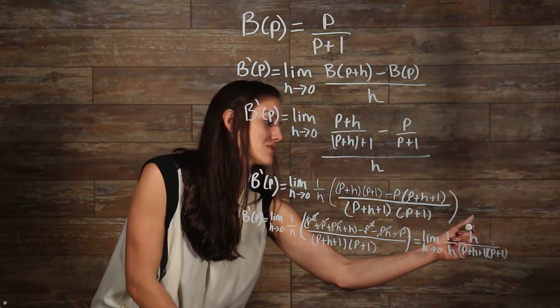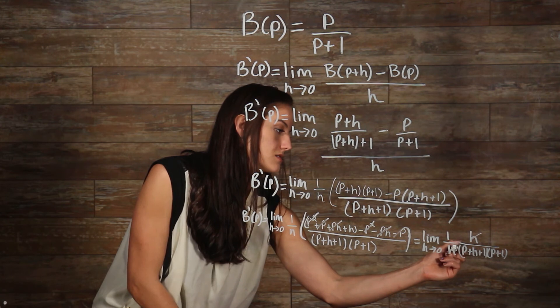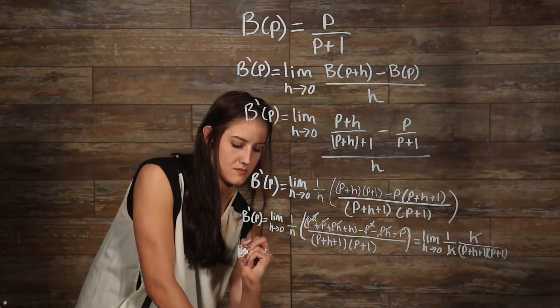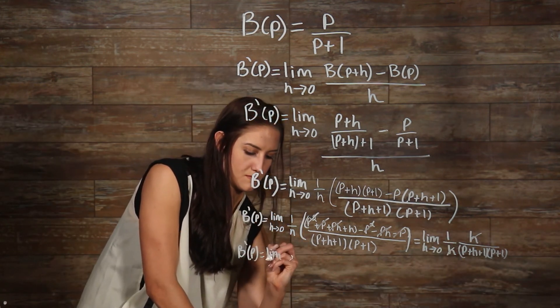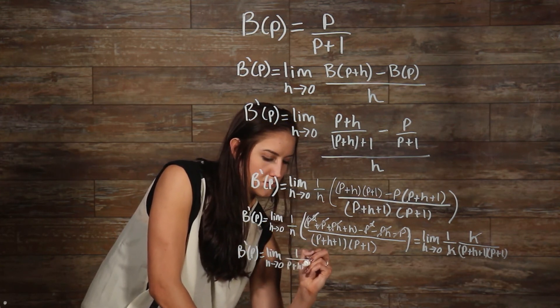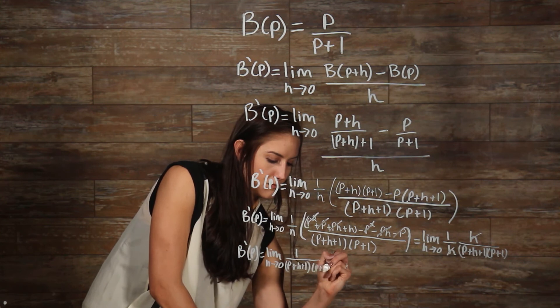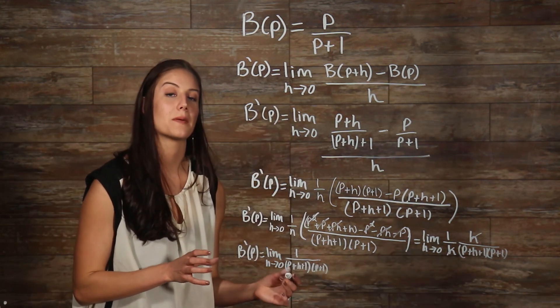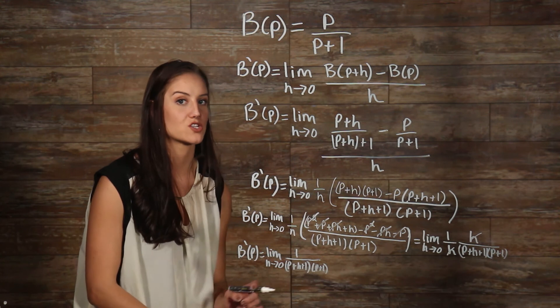We can see here that our h's are going to cancel out. So we can cancel that out. Now we're left with the simplified form. Now we can evaluate the limit by plugging in zero for wherever we see an h in our equation.